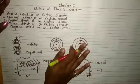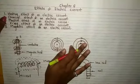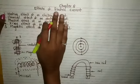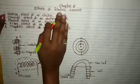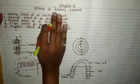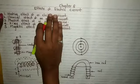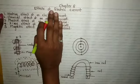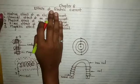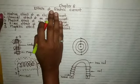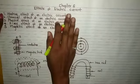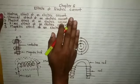Now starting with the 6th chapter. This chapter's name is 'Effects of Electric Current'. We have learnt in the last chapter Joule's law. What it says? It says whenever the electric current passes through the circuit, it is opposed by the resistance.